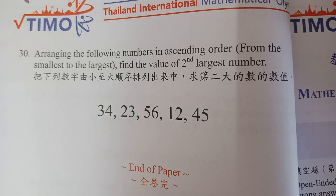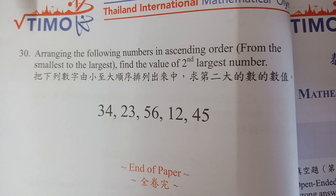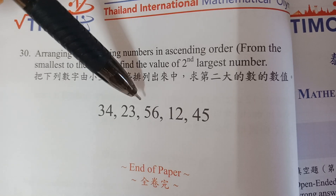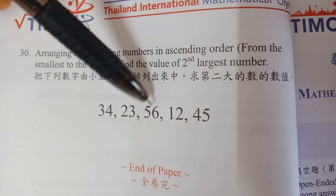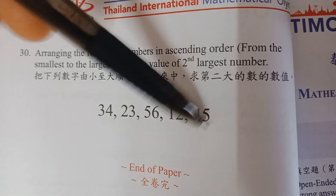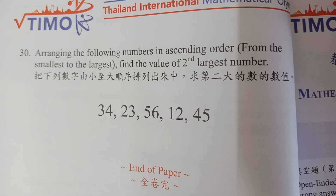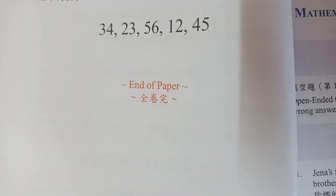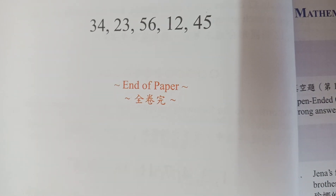Number thirty: arrange the following numbers in ascending order — from smallest to largest. Find the value of the second largest. The largest is 56, and the second largest is 45. The answer is 45.